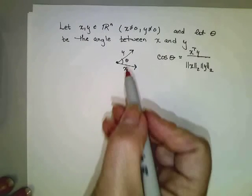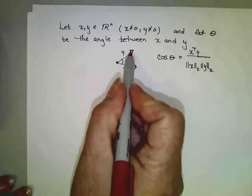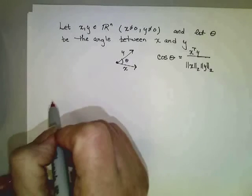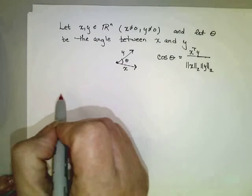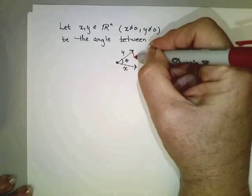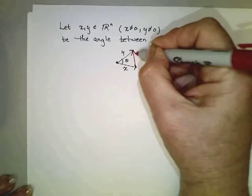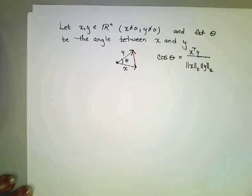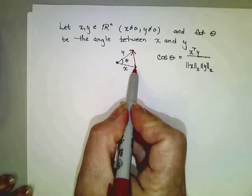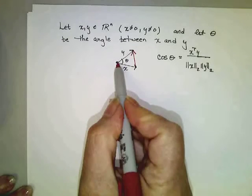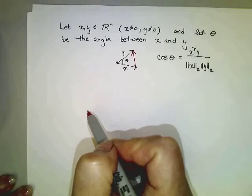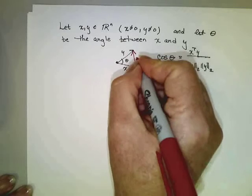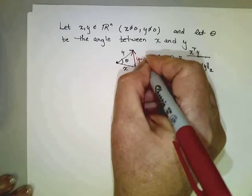So first of all, we know that x and y are non-zero vectors, and the angle between them is theta. So I'm going to draw a triangle by creating another vector for the third side of the triangle. Now, notice that vector x plus this new vector actually results in vector y if we add them, which means this new vector must be y minus x.